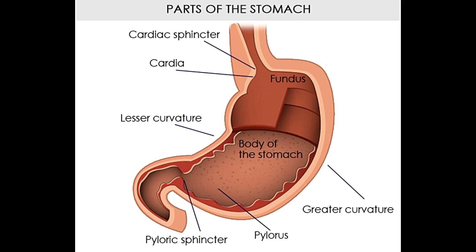The greater curvature is longer and convex in shape, whereas the lesser curvature is shorter and concave in shape. The greater curvature lies on the left of the cardiac orifice, over the dome of the fundus, and along the left border of the stomach to the pylorus. The lesser curvature lies on the right and runs from the cardiac orifice to the pylorus. The greater omentum and the lesser omentum divide the abdominal cavity into the greater sac and the lesser sac.